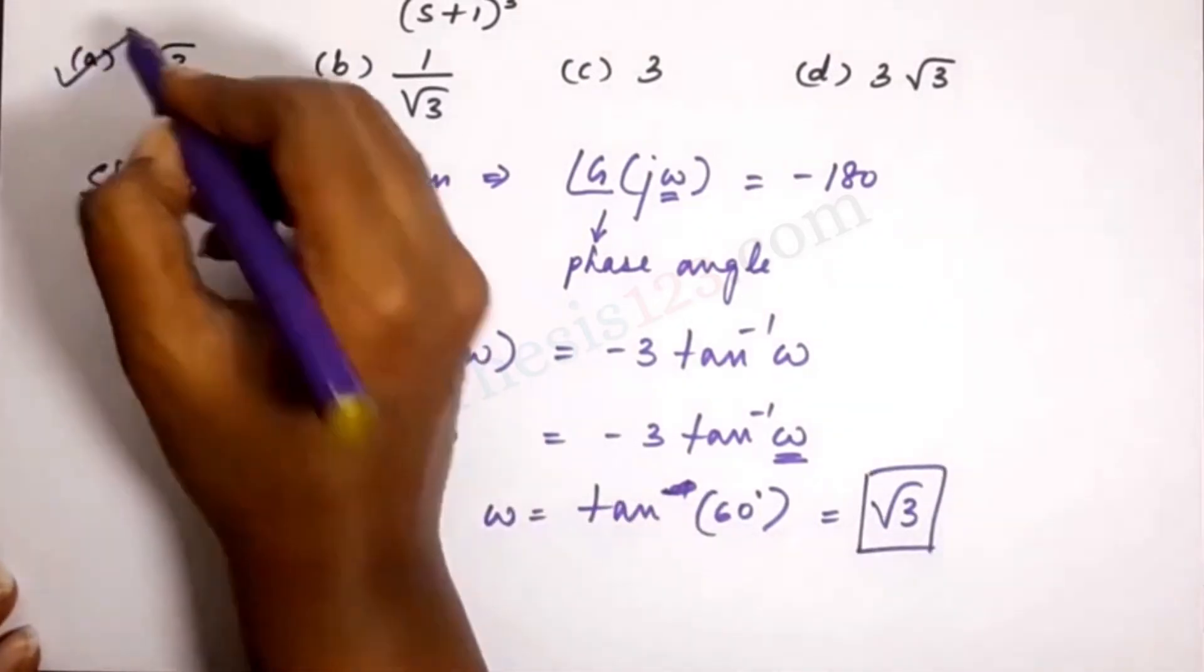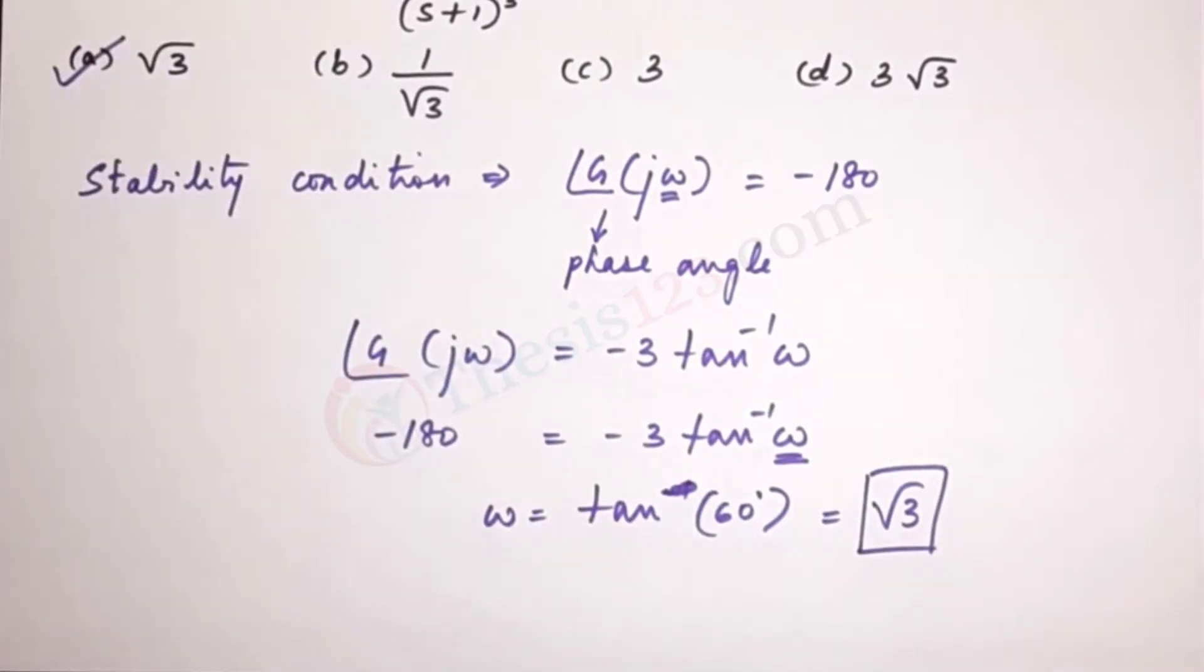So this matches the very first option. So the phase crossover frequency is root 3.